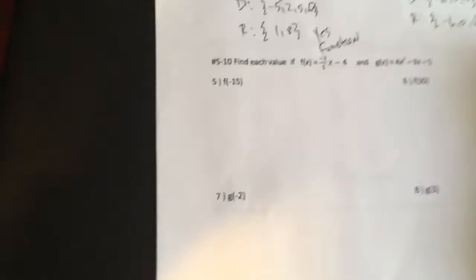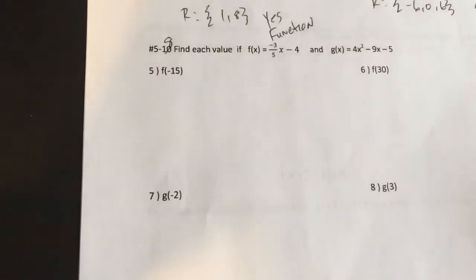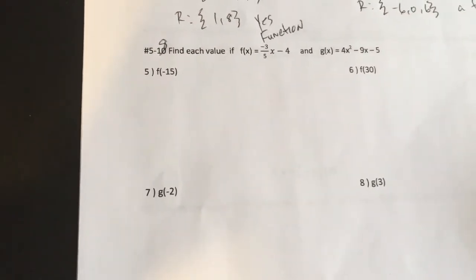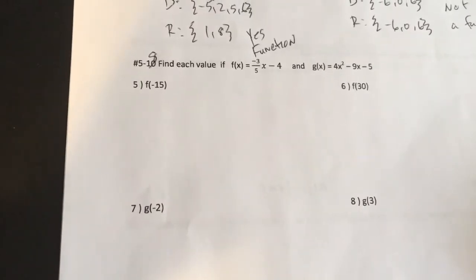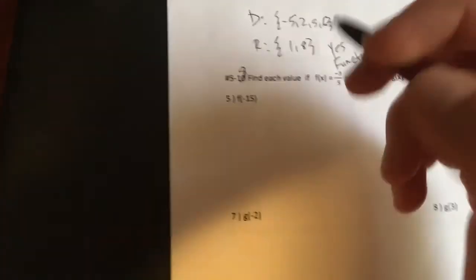All right. 5 through 10 here. Oh, I forgot to change that to 5 through 8. Find each value if f of x is negative 3 fifths x minus 4. And g of x is 4x squared minus 9x minus 5. All right. It's all about plugging in. Brought to you by Glade Plugins.